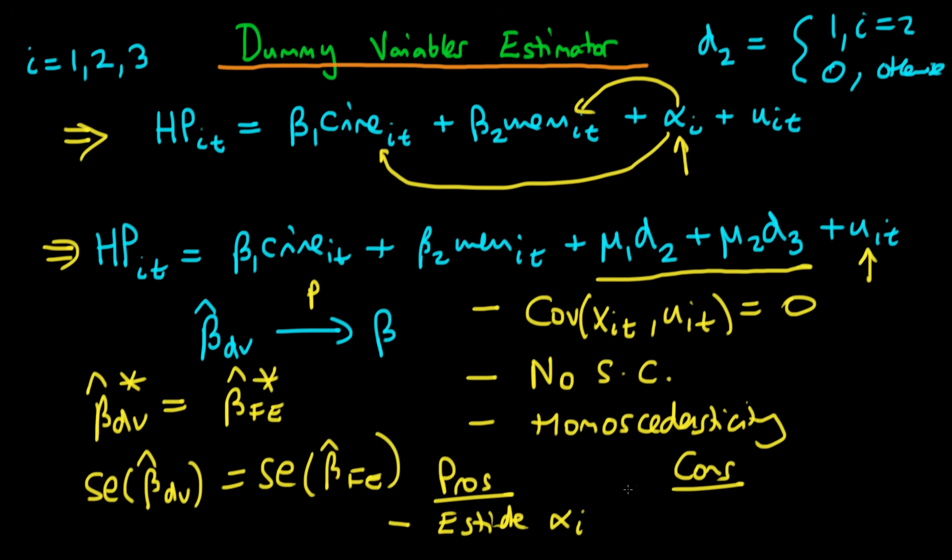if we have n being large then it quickly becomes completely ridiculous to contain in our equation dummy variables for each of the different cities. So if we've got n of order a thousand or even just a hundred then quickly the dummy variables estimator is going to be completely unwieldy and it's not going to be very neat and perhaps in those circumstances we prefer to use fixed effects.